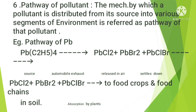The next term is pathway of pollutant — the mechanism by which a pollutant is distributed from its source into various segments of the environment. For example, Pb(C₂H₅)₄ (leaded gasoline) acts as a source; automobile exhaust releases it into air as PbCl₂, PbBr₂, and PbClBr. It then settles into soil, is absorbed by plants, and enters food crops and the food chain.